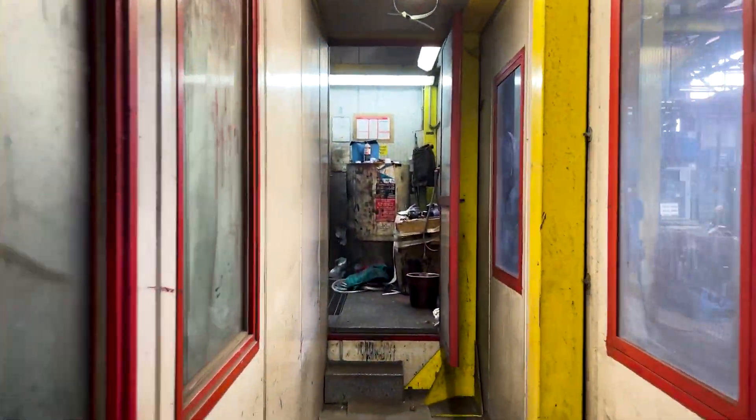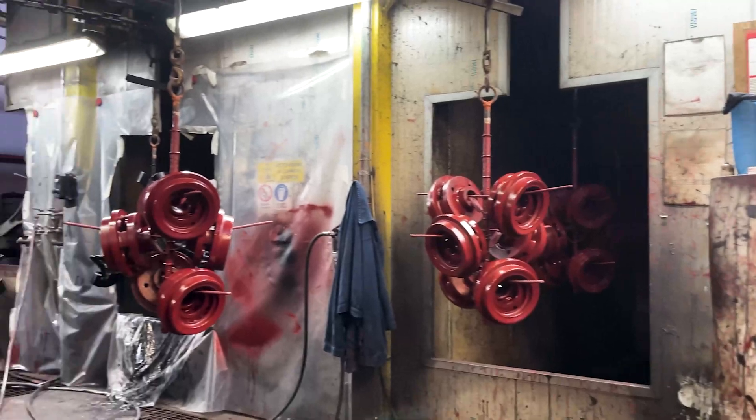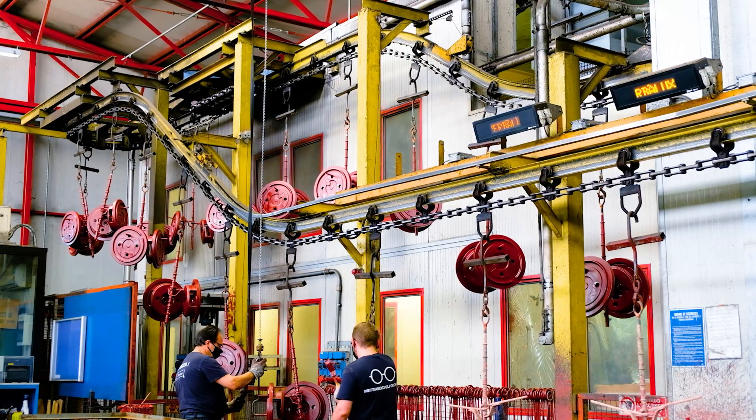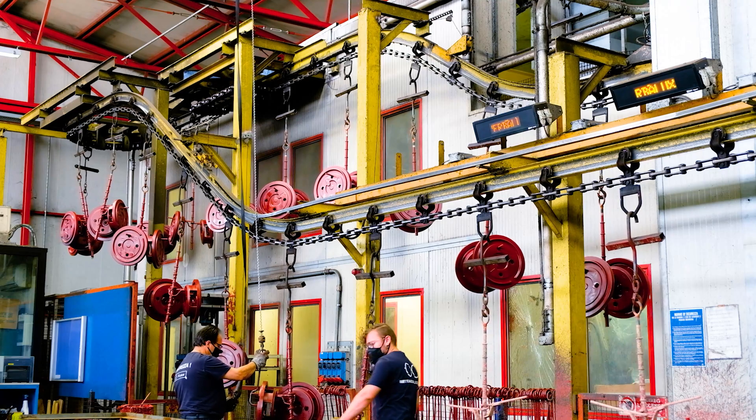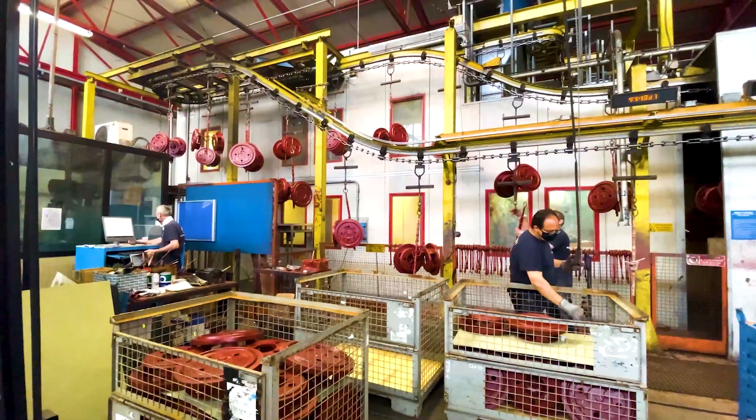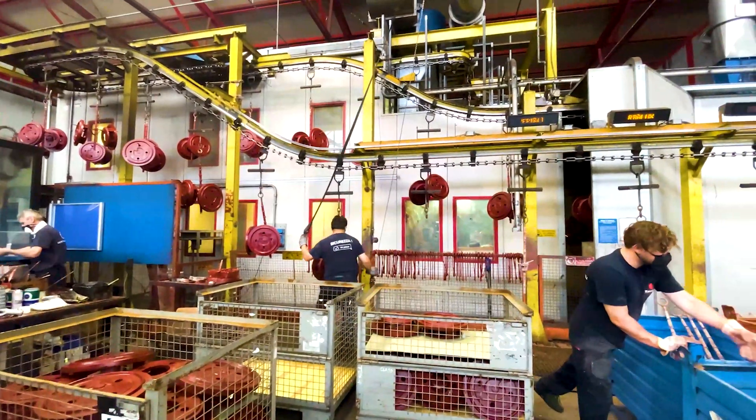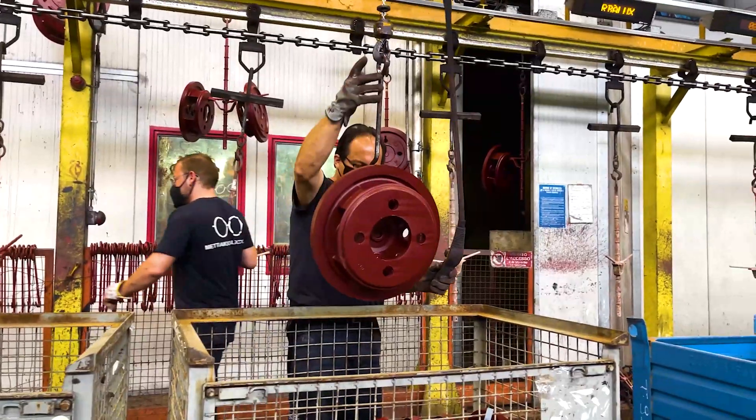Painting is another operation that is carried out at the Zanardi Fondri production plant. The painting of a cast iron object may be required both for an aesthetic factor and to protect its surface from possible damage related to the external environment, such as rust.